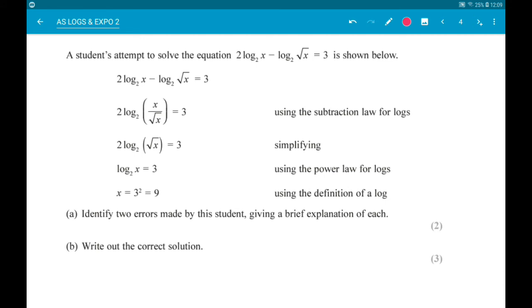So the first error is in step 2. Before you can combine logs, they both need to be singular. So because we have 2 log x minus log of root x, the 2 in the first log need to go in to make it log base 2 of x squared.